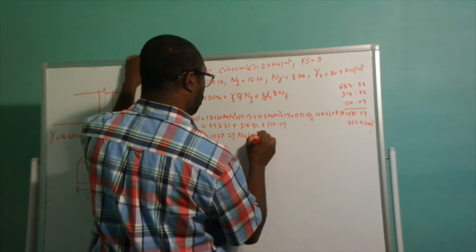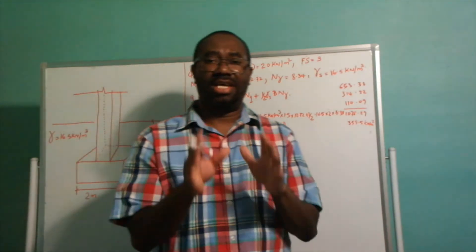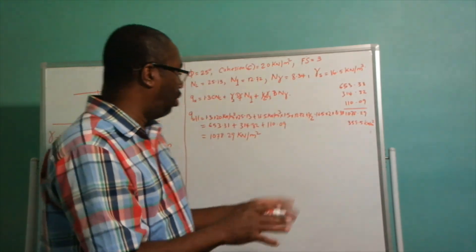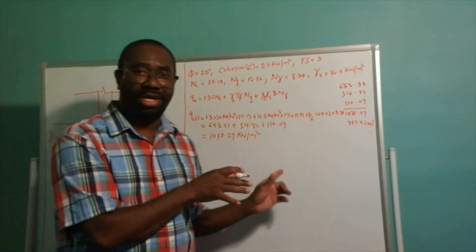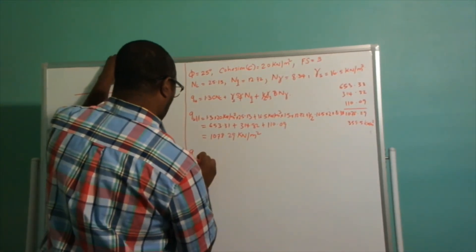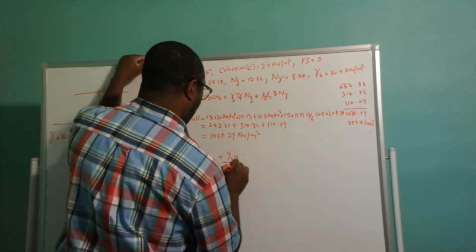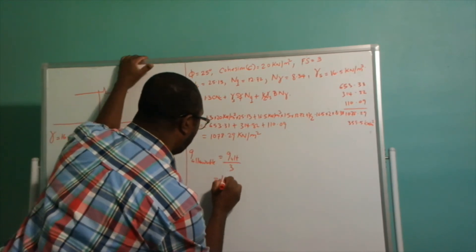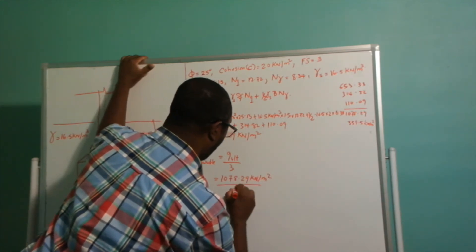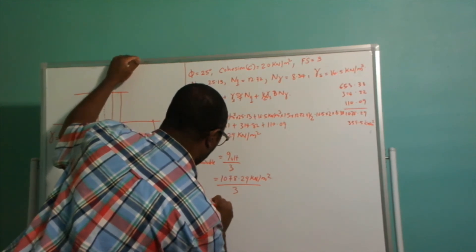So the ultimate bearing capacity of that soil is 1078.29 kilonewtons per meter square. As established before, we are not going to allow the soil to carry this full stress — we apply a factor of safety of three. So q-allowable equals 1078.29 divided by 3.